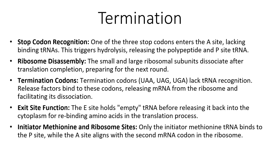The final step of the translation process is termination. This involves stop codon recognition — UAA, UAG, and UGA. These three stop codons enter the A site and lack tRNA recognition. This initiates hydrolysis, which releases the polypeptide and the P site tRNA. The small 16S and large 28S ribosomal subunits then dissociate after translation completion, preparing for the next round.